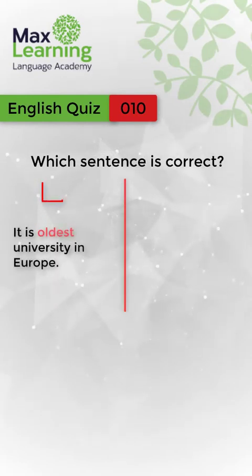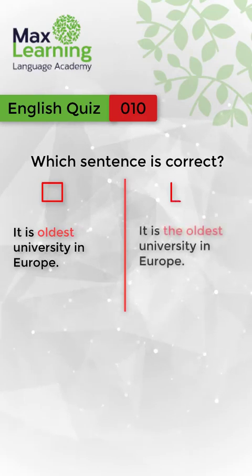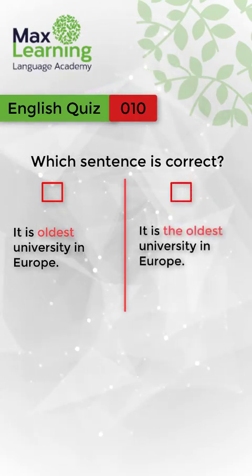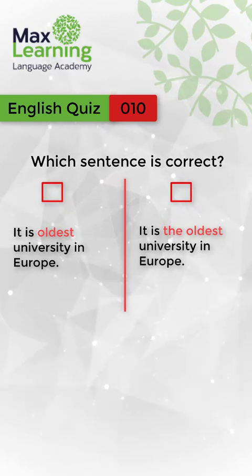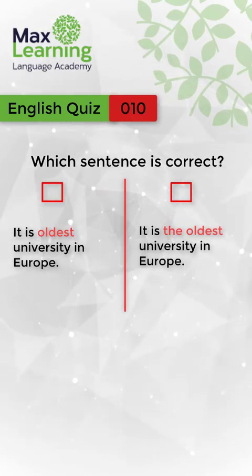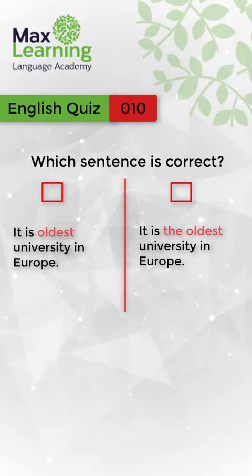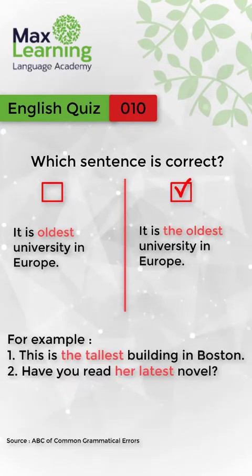Which sentence is correct? Option A: It is oldest university in Europe. Option B: It is the oldest university in Europe. I'll give you some time to think. The correct answer is: It is the oldest university in Europe. See you in the next video.